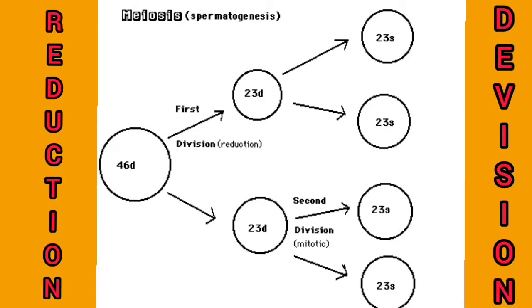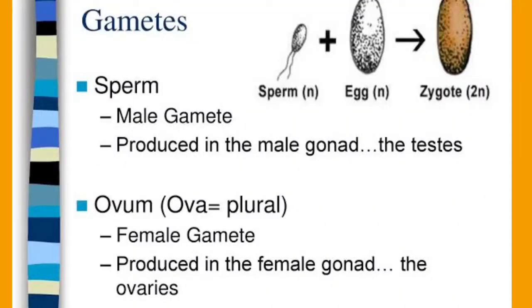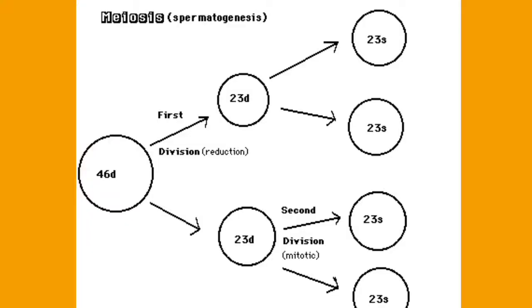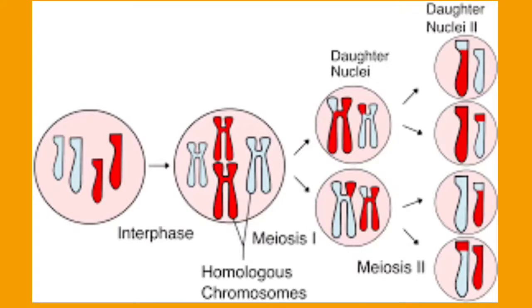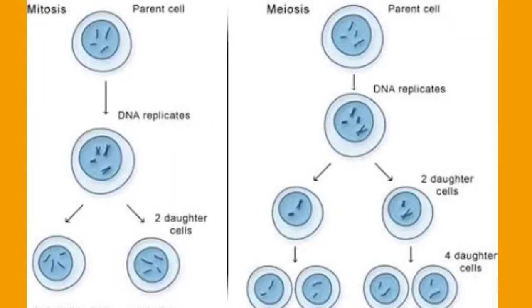Because the chromosome number is halved, this division is also called reduction division. In animals, meiosis occurs in the testis to produce sperm, and in females it occurs in the ovary to produce ovum. The resulting cells have half the number of chromosomes — they are not paired. The body cells of multicellular organisms are diploid.